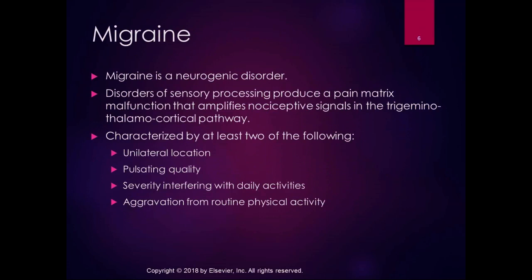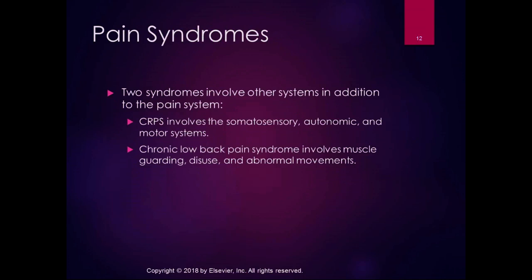We talked about general central sensitivity syndromes and headaches and red flags for headache. We're going to start now talking about some other pain syndromes. Two syndromes that involve other systems in addition to the pain matrix are complex regional pain syndrome, which involves the somatosensory, autonomic, and motor systems, and chronic low back pain syndrome, which involves muscle guarding, disuse, and other abnormal movements. Since those are a little bit different from the others we've talked about, we're going to talk about them separately.